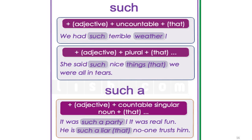We use 'such' before an adjective and a noun. For example: 'We had such terrible weather.' We use 'such' before an adjective and an uncountable noun, or before an adjective and a plural countable noun — for example: 'She said such nice things that we were in tears.' We use 'such a' before an adjective and a singular countable noun — for example: 'It was such a party — it was real fun,' and 'He's such a liar that no one trusts him.'